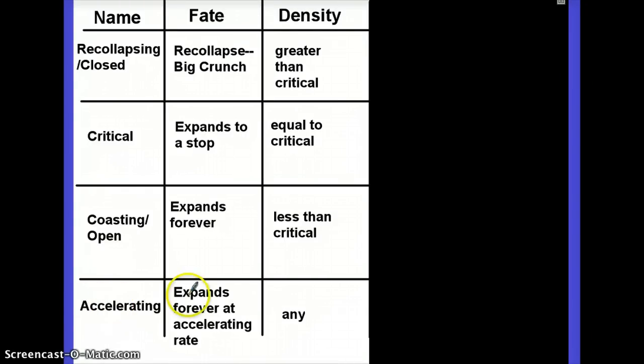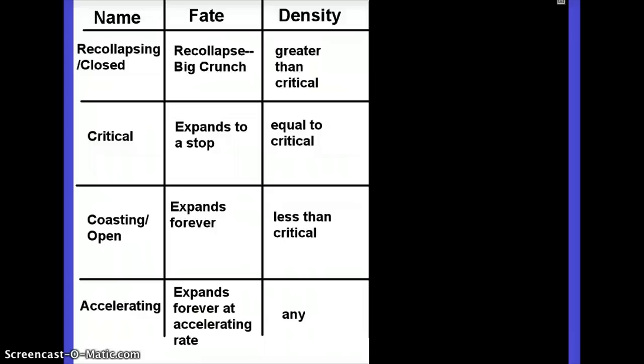And then finally, we have the accelerating universe. And in that case, we expand forever at an accelerating rate. And the density can be anything in that case, because if we have an accelerating universe, there's some mysterious unknown force that we really actually don't know what it is. But if that force is big enough, then it could overcome any kind of gravity. If you make it big enough, it doesn't matter what the density of the universe is in the accelerating universe. You can get that in any situation, as long as this force that causes the acceleration is big enough.